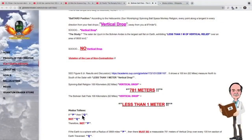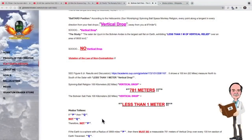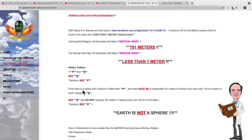And again, he misstates a modus tollens argument. If p, then q, not q, therefore not p. If the earth is a sphere with a radius of 3959, then there must be a measurable 781 meters of vertical drop over every 100 kilometers of earth transverse. Again, that is an incorrect statement. Once again, because his argument is incorrect, confirming his misunderstanding of the problem, his conclusion is incorrect.